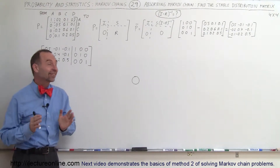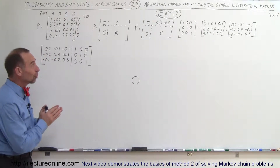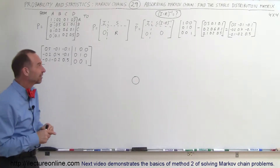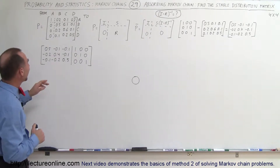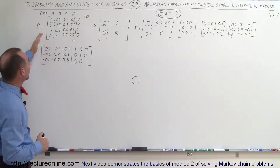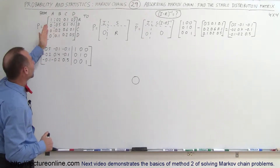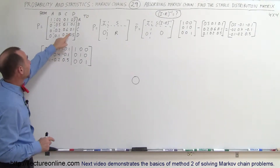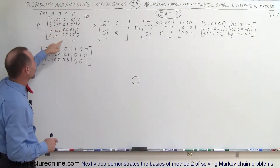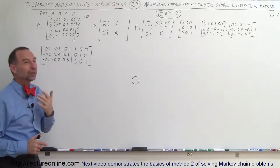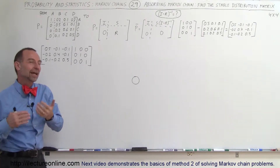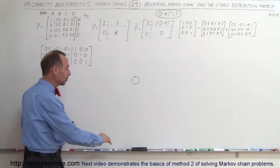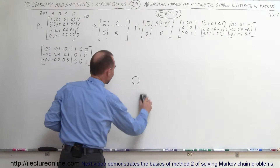Welcome to our lecture. In this example we're going to show you how to find the stable distribution matrix in the case that we have a 4x4 matrix and there's only one absorbing state. This means we're going to have to find the inverse of a 3x3 matrix, which is a little bit tricky, and I'm going to show you how to do that in this example.